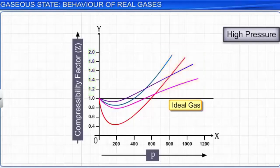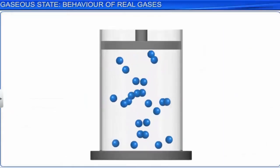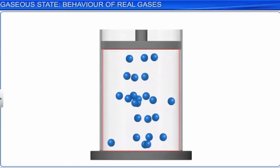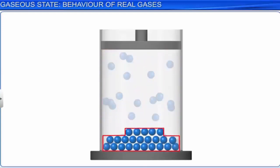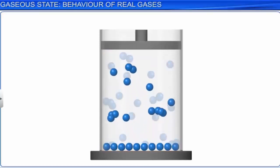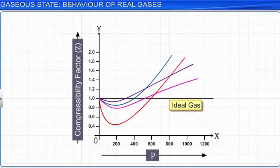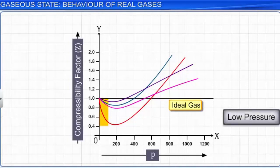At intermediate pressure, most gases have a compressibility value less than 1, meaning they are easily compressible. Thus, we can conclude that real gases show ideal behavior when the volume occupied by them is so large that the volume of the molecules can be neglected in comparison. Hence, the behavior of a gas becomes more ideal when the pressure is very low. The magnitude of this low pressure varies for each gas as it depends on the nature of the gas and the temperature.